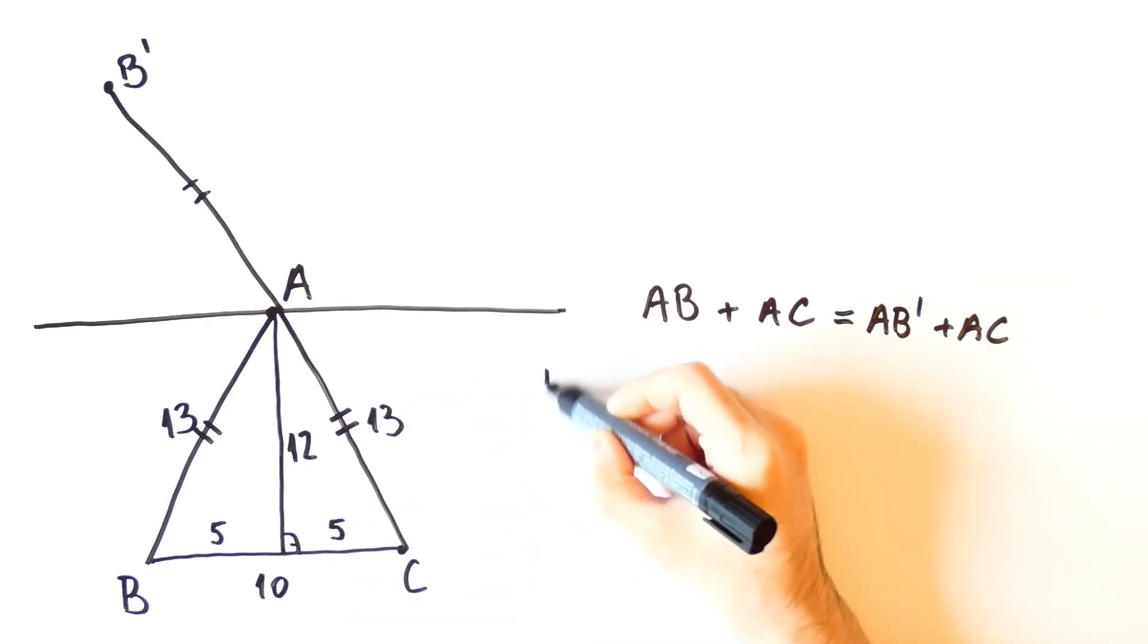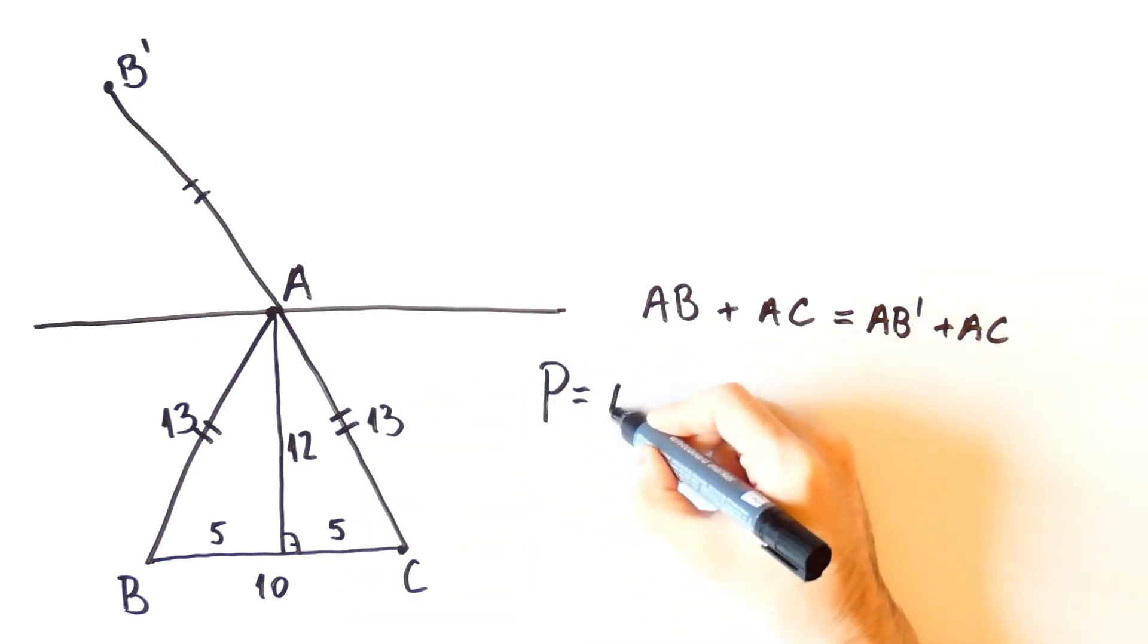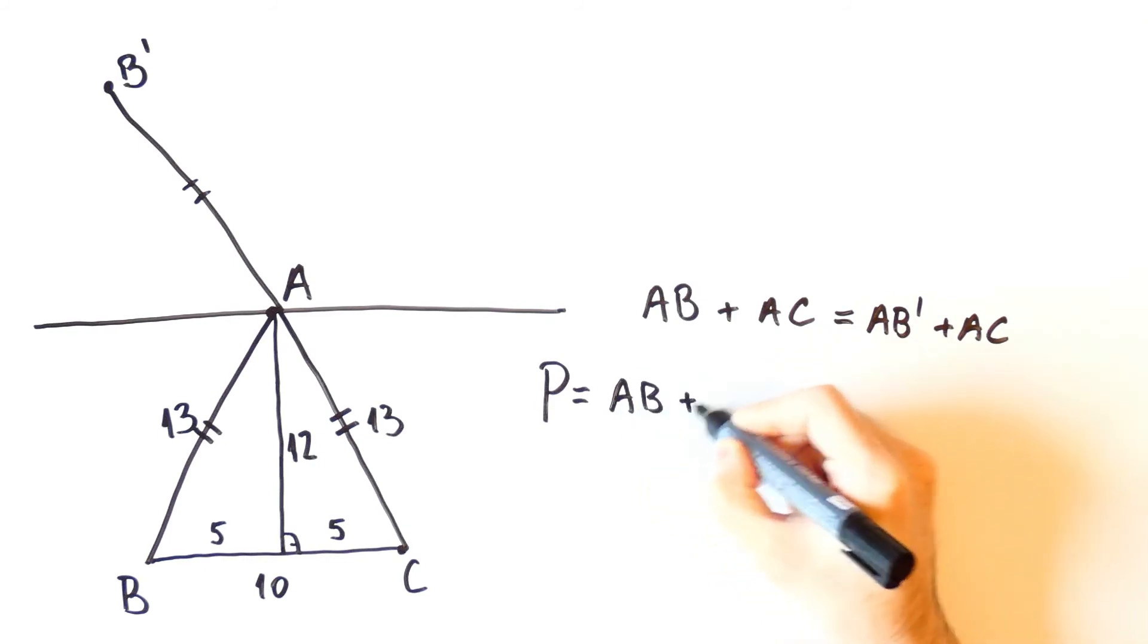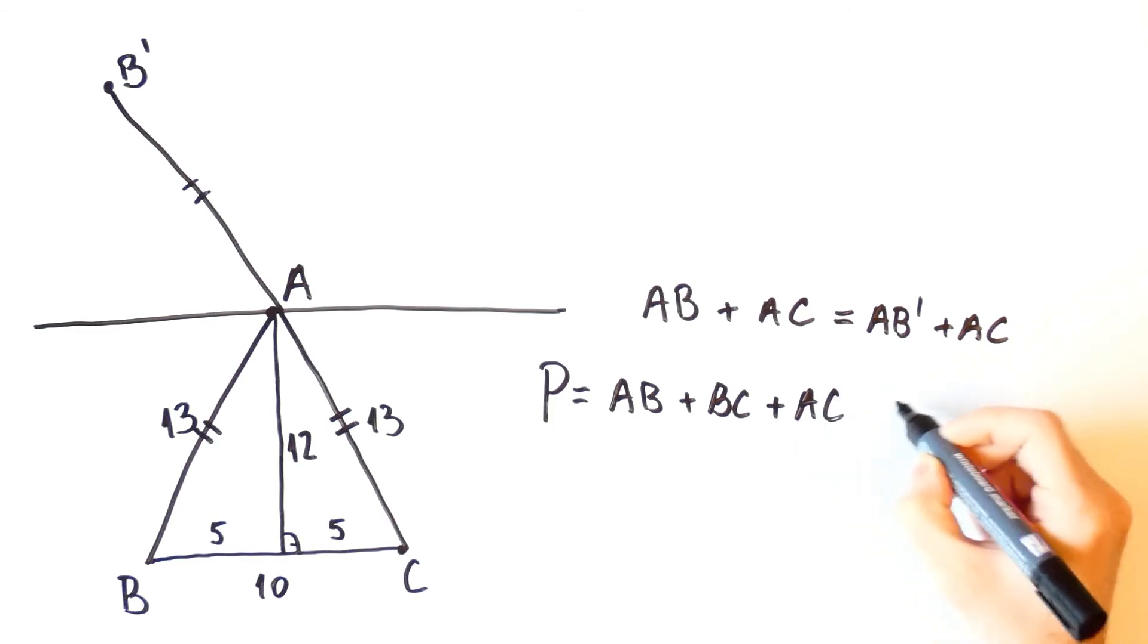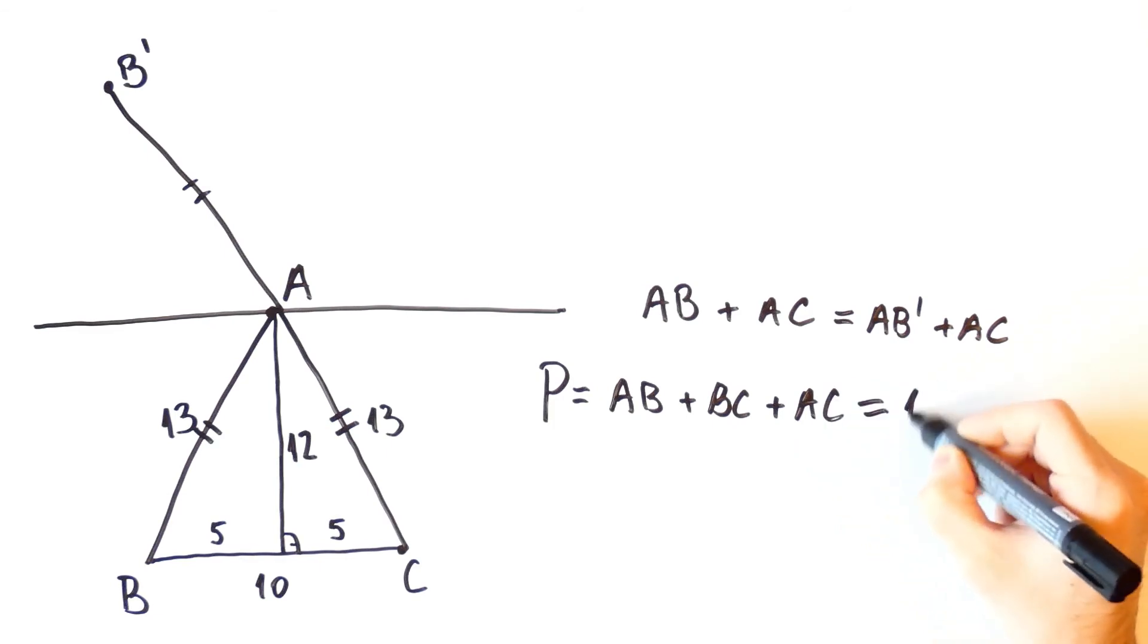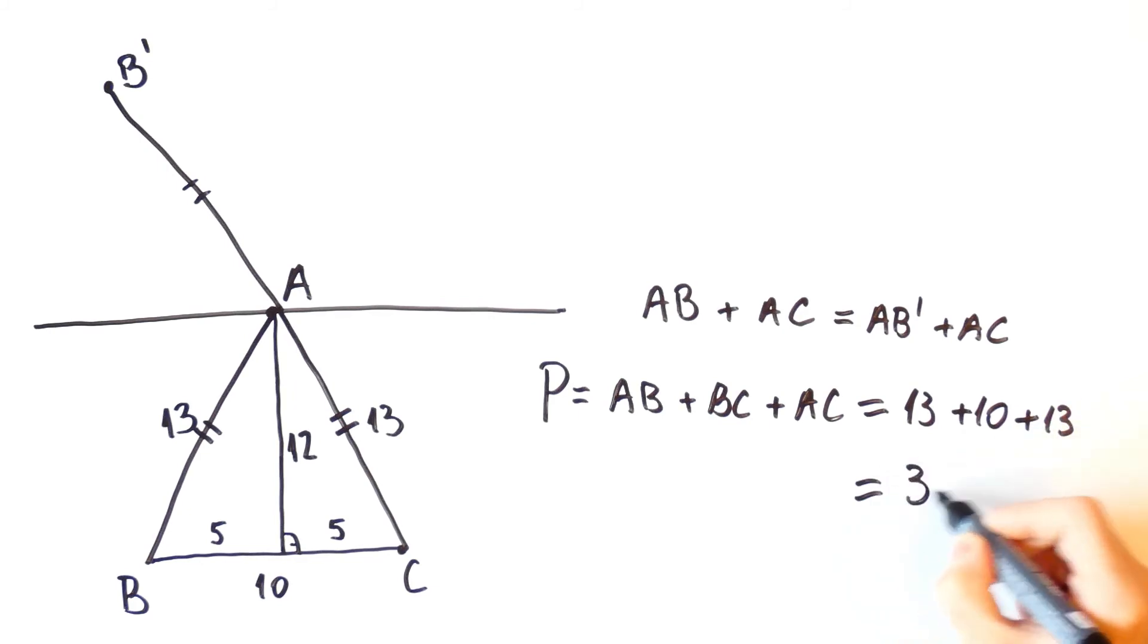Now the perimeter is equal to AB plus BC plus AC, which is equal to 13 plus 10 plus 13, and that is equal to 36. So the smallest possible perimeter that a triangle from our problem can have is 36.